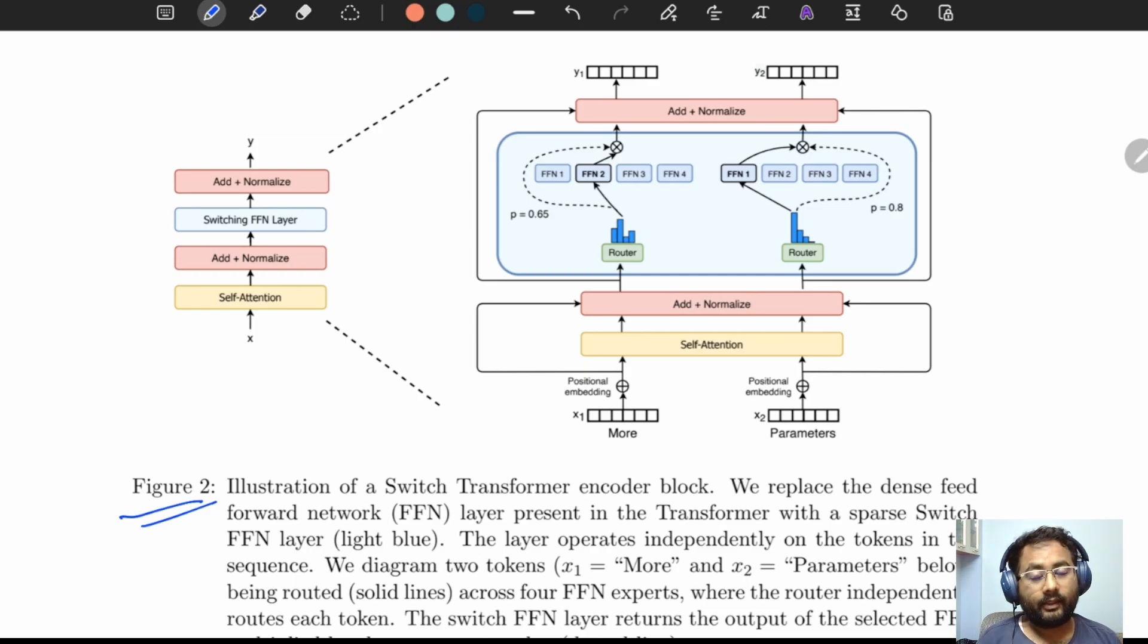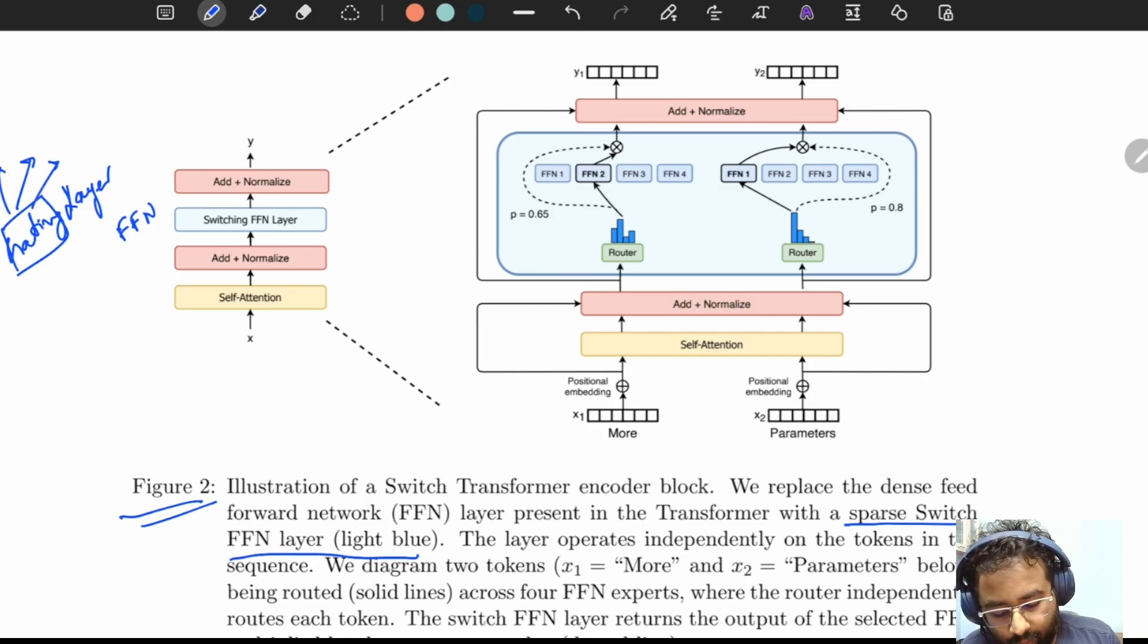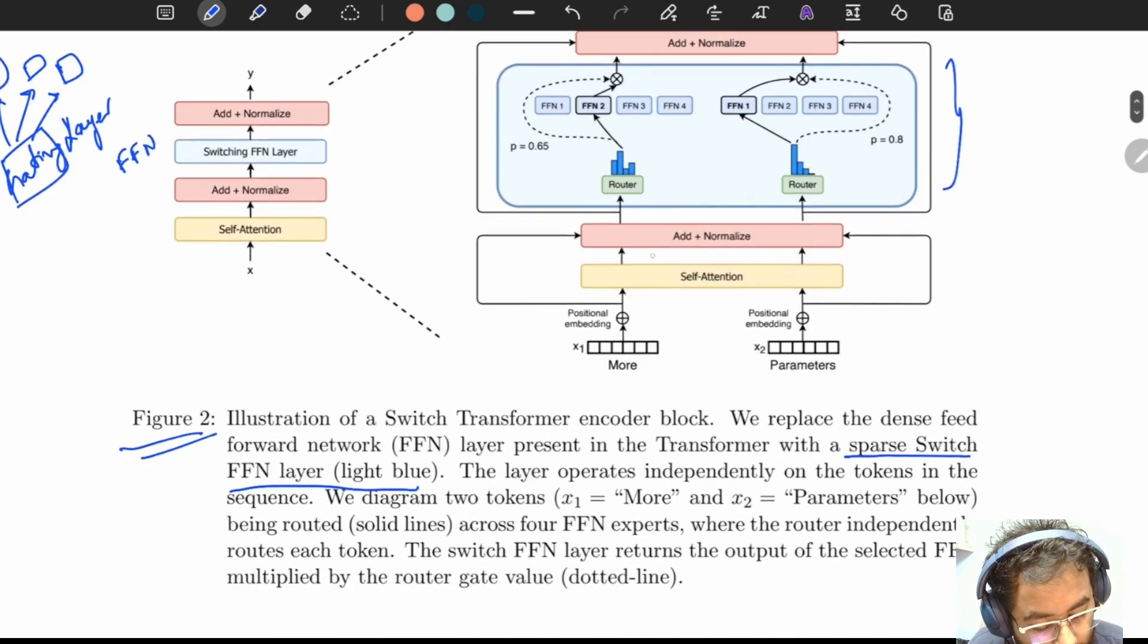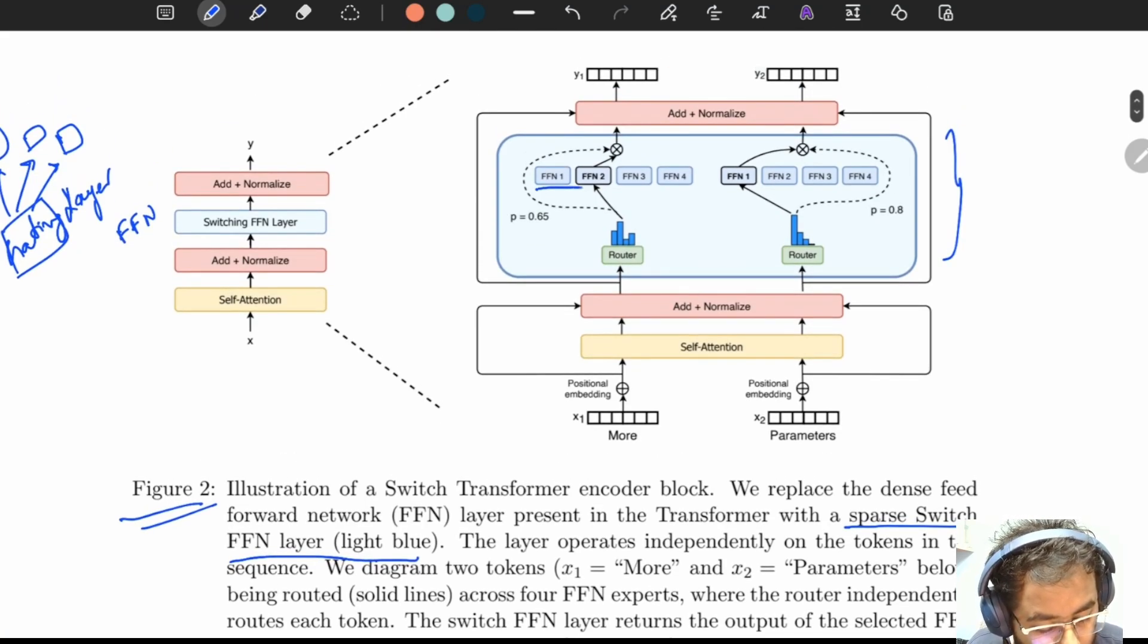Let's have a look at figure 2 of the paper. Here the authors have replaced the usual feed forward layers of the transformer block with a sparse switch FFN layer. What this means is instead of having a feed forward network here, they are just having mixture of experts network here. So essentially they have a gating layer which they call the router and they have a couple of experts through which they can pass the data.